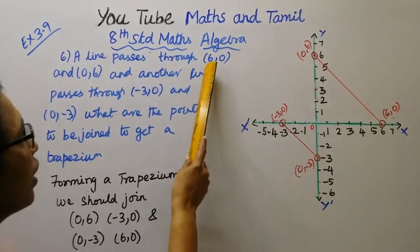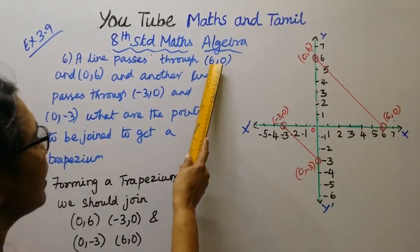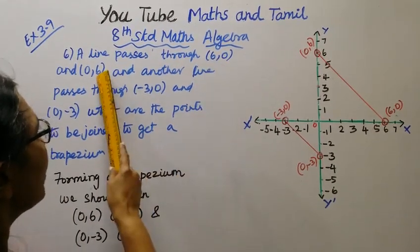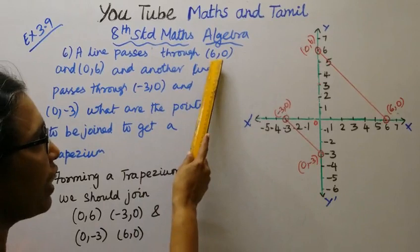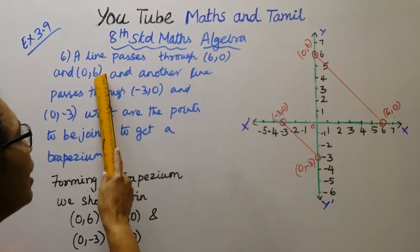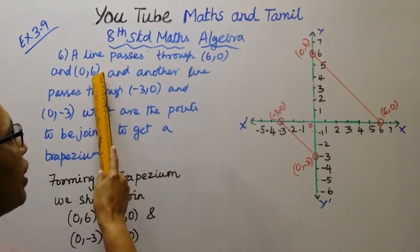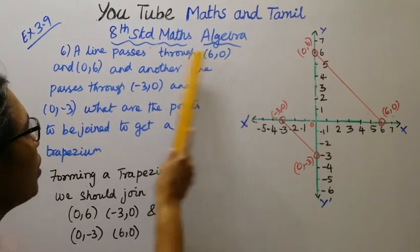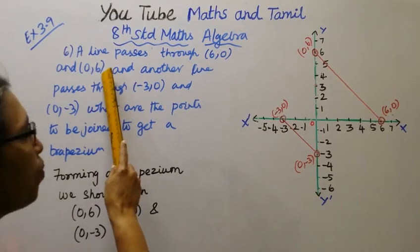Numbers are going to be 6. The x-axis is at 6. First coordinate x, second coordinate y. Here the points are 6,0 and 0,6.